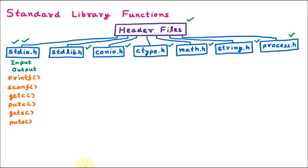stdio.h also contains all the file handling functions. The first is fopen, used for opening a file. The next is fclose, used for closing a file. All file functions are part of stdio.h, including fprintf, fscanf, fgetc, fputc, fputs, and fgets.